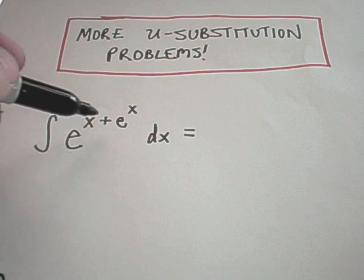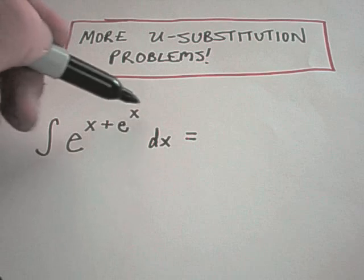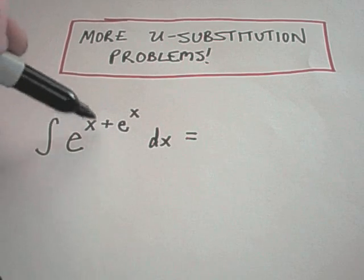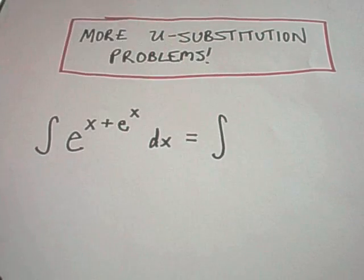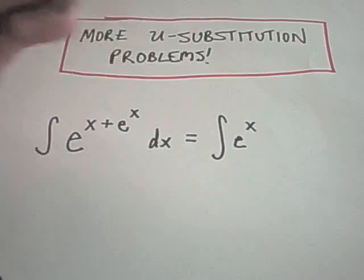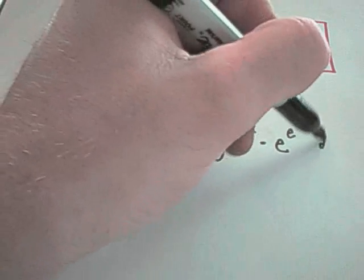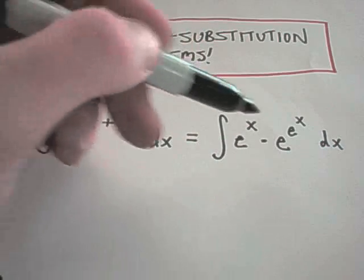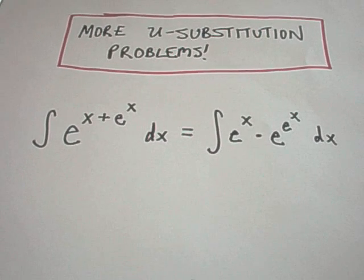In this first one we have e raised to the x plus e to the x. The thing that catches my eye is there's an e to the x in here, and the derivative of e to the x is also e to the x. So actually the first thing I'm going to do is rewrite this using some algebra. I can rewrite this as e to the x times e raised to the e to the x. Because remember, if we have like bases, we add the exponents, so I could combine this stuff on the right back into what I had before if I wanted to just write it with a single base of e.